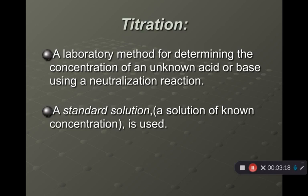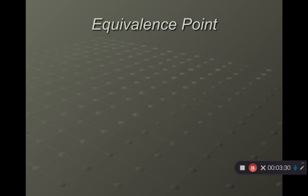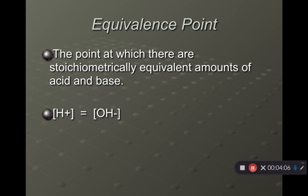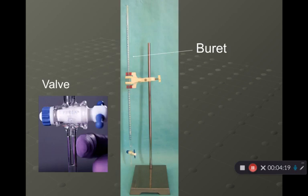A standard solution — a solution of known concentration — is used; this is sometimes called the titrant, and it's often the base, usually sodium hydroxide or potassium hydroxide. Your goal is to reach an equivalence point: the point where there are stoichiometrically equivalent amounts of acid and base. What that means is moles of acid equal moles of base. They can also represent it using brackets — meaning molarity — so molarity of acid equals molarity of base, which also reflects moles acid equal moles base.